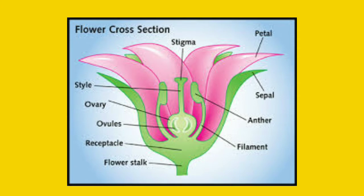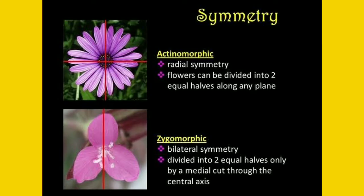Next comes the actinomorphic flower, named in terms of its symmetry. When the flower can be divided into two equal radial halves in any plane passing through the center, it is called an actinomorphic flower. As you can see in the diagram, the flower can be divided into two equal parts with any plane passing through the center. Examples are mustard and china rose.